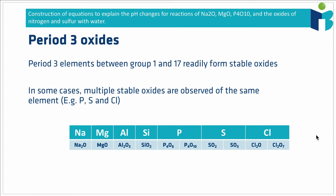Our period 3 elements are given down here. We go from sodium to magnesium to aluminium to silicon to phosphorus to sulfur to chlorine. You'll notice we only go up to group 17 and not to the noble gases, because our noble gases aren't going to form oxides. So when we're thinking about our period 3 oxides we're only thinking about between group 1 and group 17.